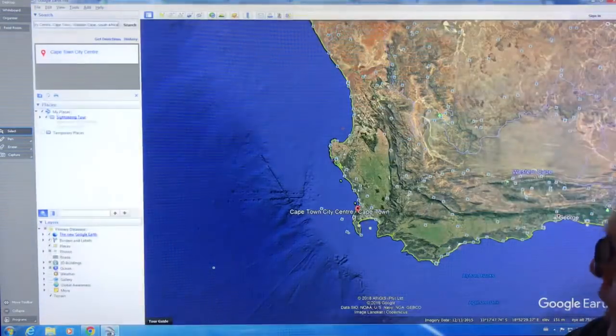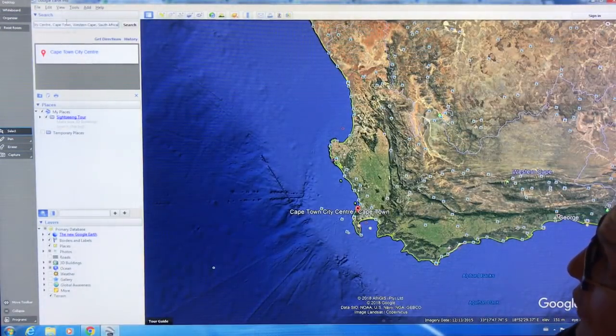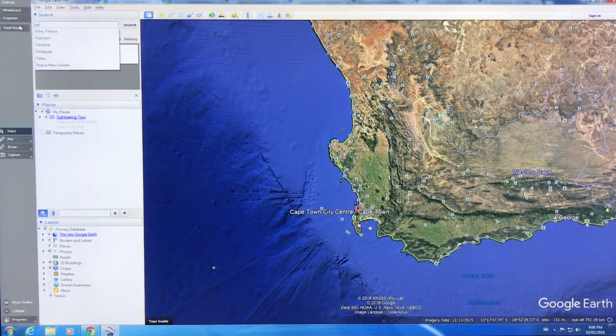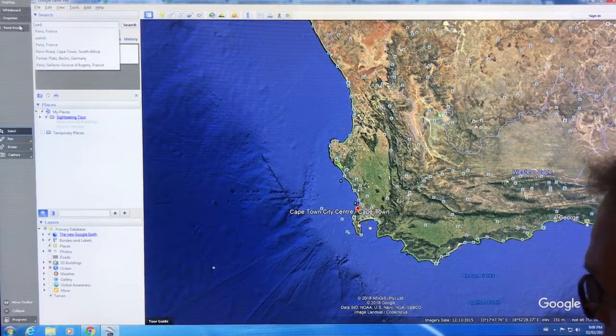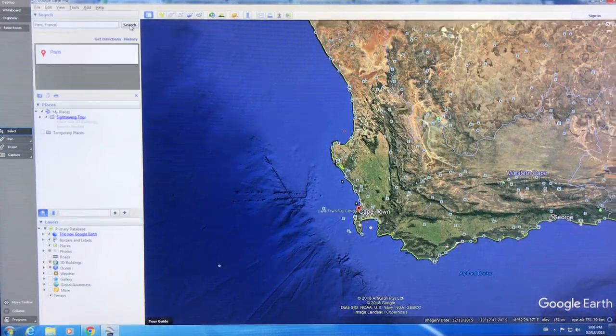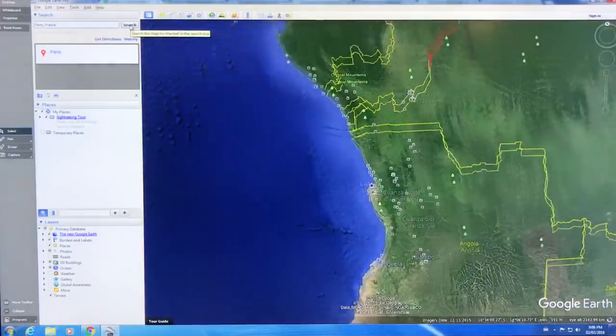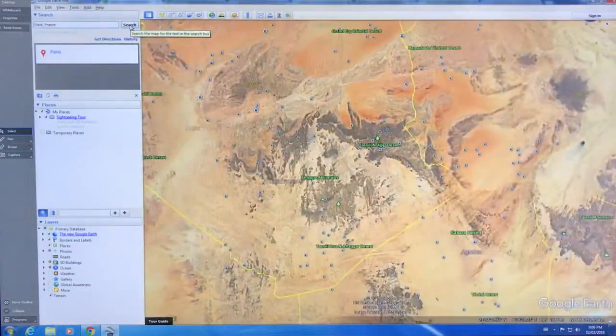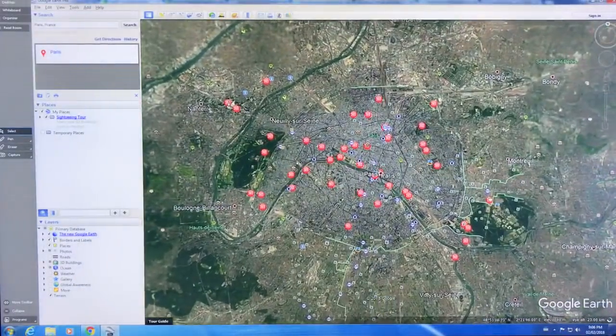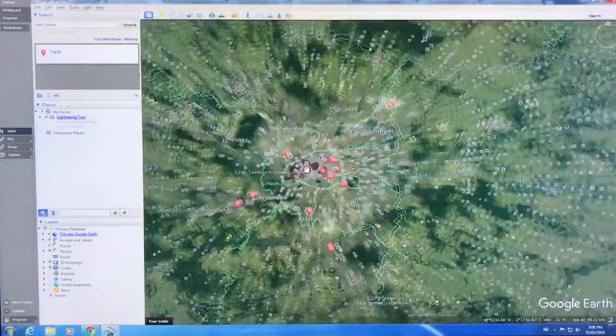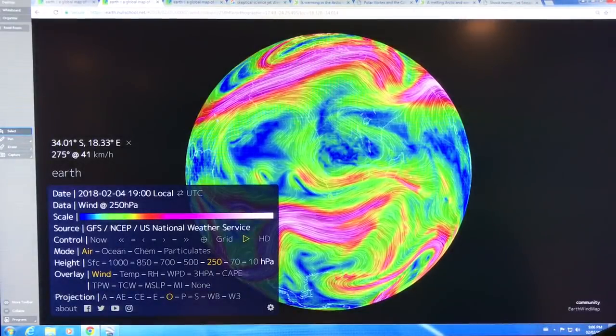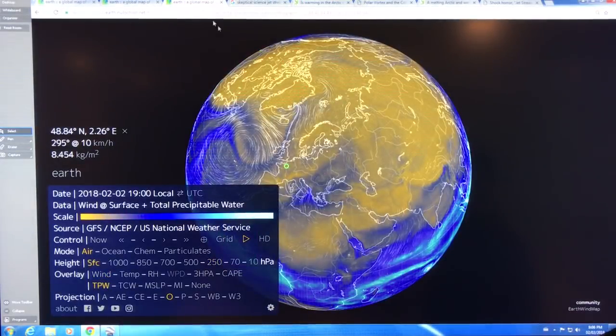Let's have a look at Paris now. If we search for Paris, Paris, France, and go there. Search, again, in Google Earth Pro, or Google Earth if you've got it. You can see, expand out, and you can see where Paris is. Now I will go back here, and we'll have a look here. So here's Paris.